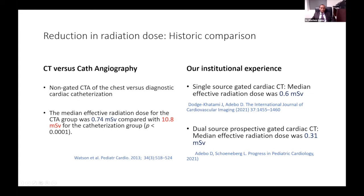When we compare radiation exposure with cardiac catheterization, Watson and colleagues showed that non-gated CT — which usually uses low radiation dose — found 0.74 millisieverts, compared to 10.8 millisieverts for cardiac catheterization, which is more than tenfold higher radiation. In our institute, we looked at single-source and dual-source radiation dose exposure: from single-source we found 0.6 millisieverts, and with dual-source prospective gated technique, the median effective radiation dose is 0.31 millisieverts, which is about 3.4 chest X-rays.